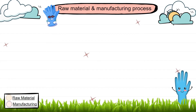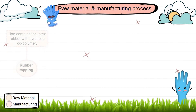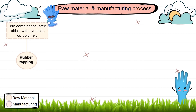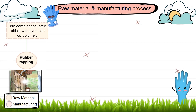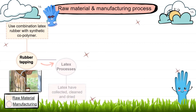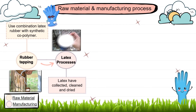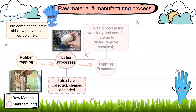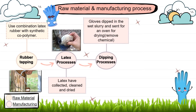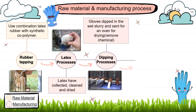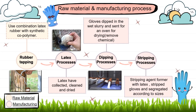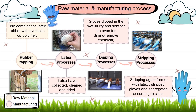Now let's see what is the raw material and manufacturing process. Firstly, raw materials are produced from latex through a rubber tapping process and combined with synthetic copolymer. The latex is collected, cleaned, and also dried. Gloves are dipped in the wet slurry through the dipping process, and the stripping process strips and segregates gloves according to sizes.